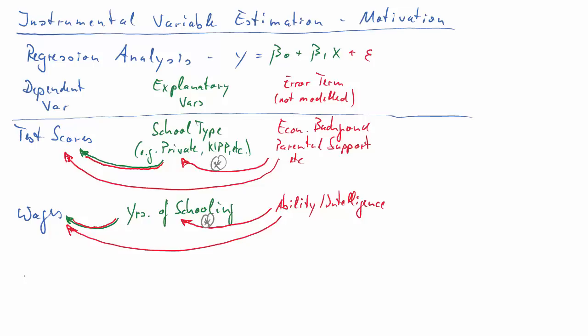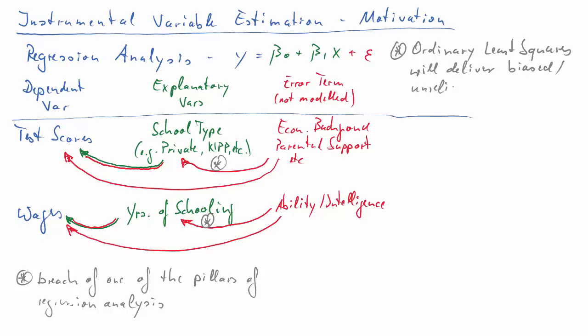So it's this aspect of these omitted variables, which are in the error term, of those being correlated to the explanatory variables, which breaches one of our main assumptions or pillars of regression analysis. If you've done any regression course, you will have heard of the zero conditional mean assumption. That is the assumption that breaches here. When we do regression analysis, we have to assume ordinarily that the error term and the explanatory variables are uncorrelated. If they are not, then ordinary least squares, which is the type of regression analysis all standard software packages do, like SPSS, Excel, will deliver biased or unreliable results.